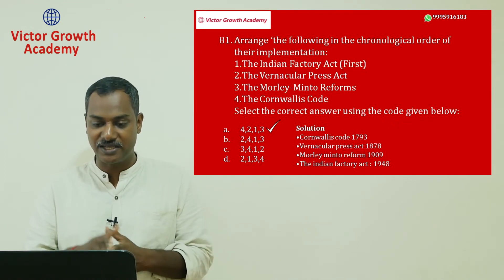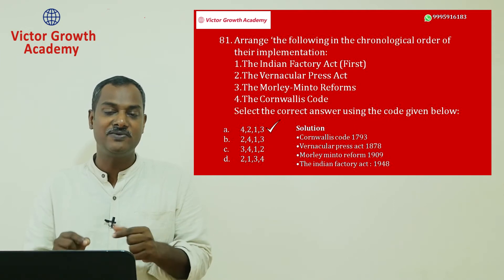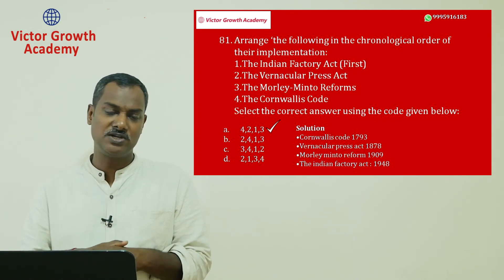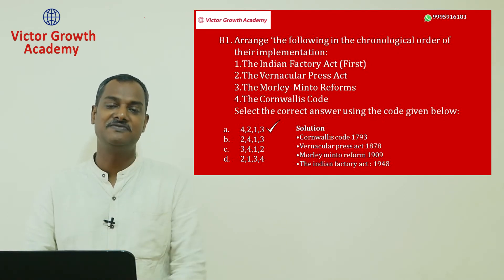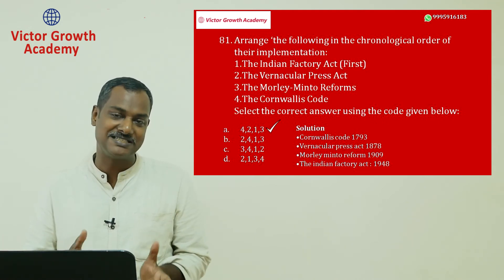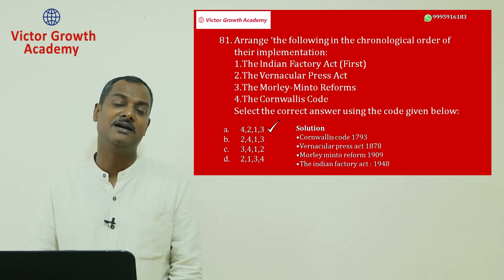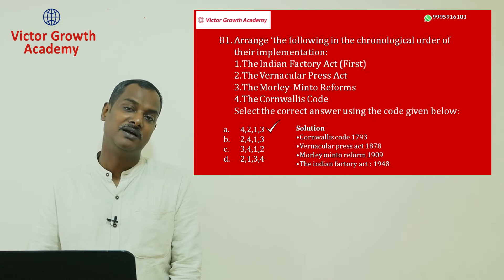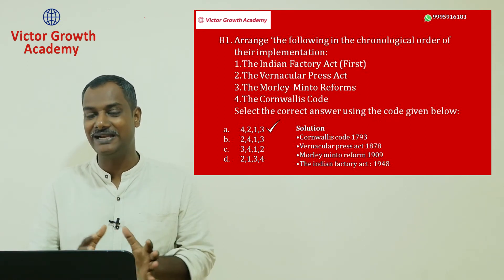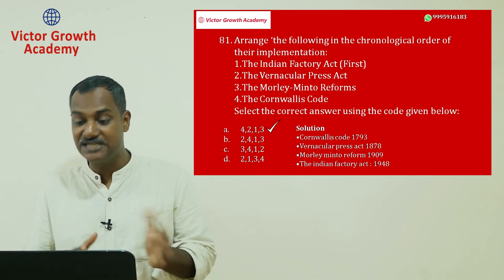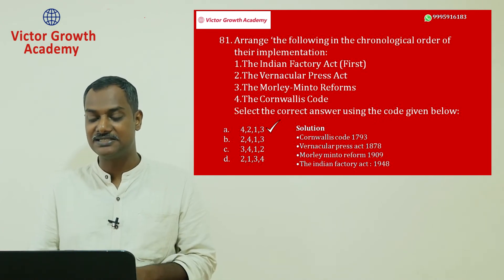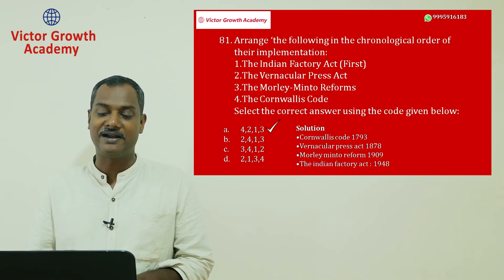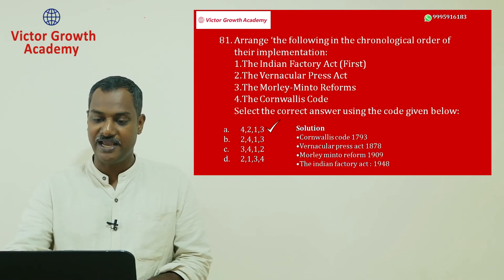Cornwallis created civil service training at Haileybury around 1800, and Fort William College in Calcutta. The Vernacular Press Act came in 1878, Morley-Minto Reforms in 1909, and the Indian Factory Act in 1948. Working this out, the answer for question 81 is A. The chronological order: Cornwallis Code (1793), Vernacular Press Act (1878), Morley-Minto Reforms (1909), Indian Factory Act (1948).